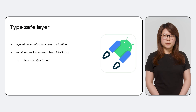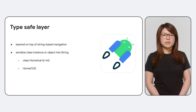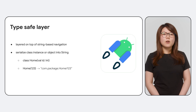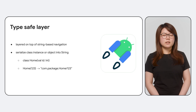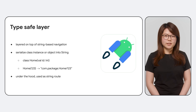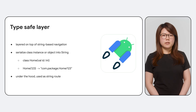For example, let's say you declare a nav destination called home with an integer argument. When you give us a class instance of home with id equals 123, we take its fully qualified name and the provided id and serialize it into the string com.package.home.123. Under the hood, the string is used as the route in the underlying string-based system.